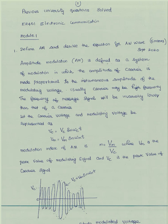The modulating index M is equal to Vm divided by Vc, where Vm is the peak value of the modulating signal and Vc is the peak value of the carrier signal.